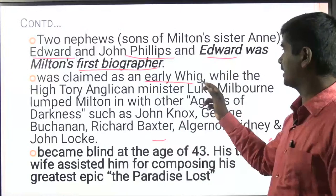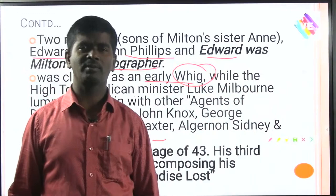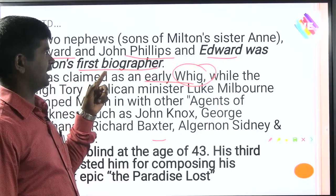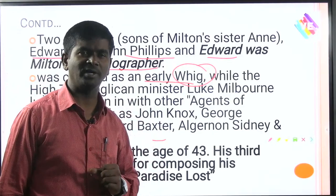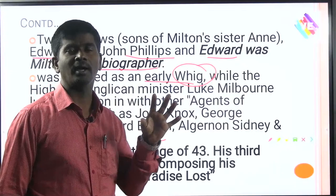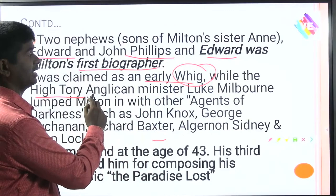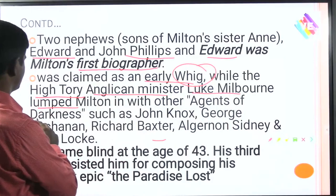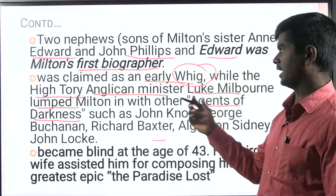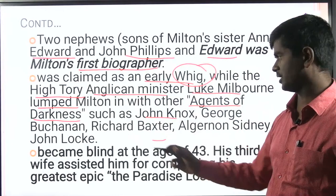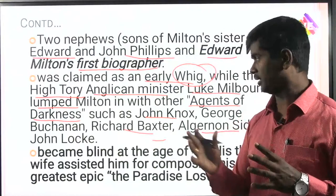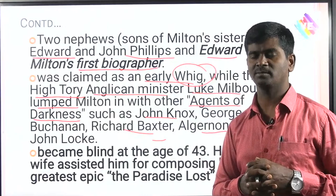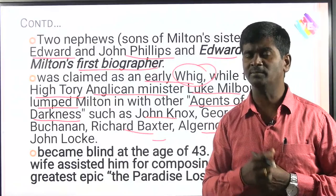Milton was claimed as an early Whig. During the Restoration, two important political parties were established: the Tories and the Whigs. Whigs were supporters of Protestants, Puritans, the Commonwealth, and Parliament; Tories were Anglicans and Catholics. The high Tory Anglican minister Melbourne lumped Milton with other 'agents of darkness,' such as John Knox, George Buchanan, Richard Baxter, Algernon Sidney, and John Locke — because they were spreading the importance of Puritanism and supporting Parliament.